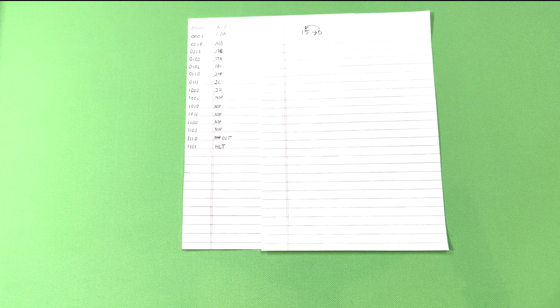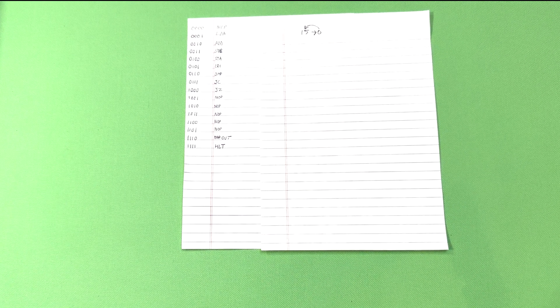The program that I want to write is one that will start at the value 15 and count down to zero. Once that's zero, it should restart back to 15 and repeat counting down.